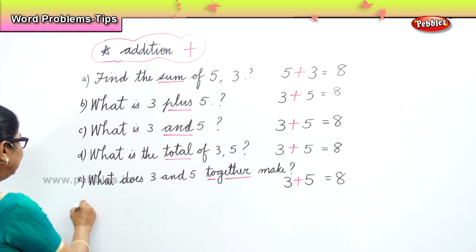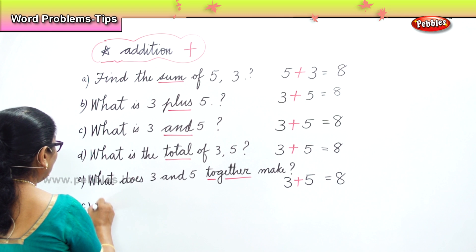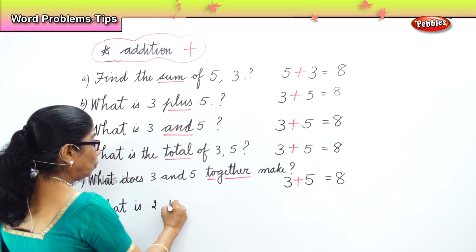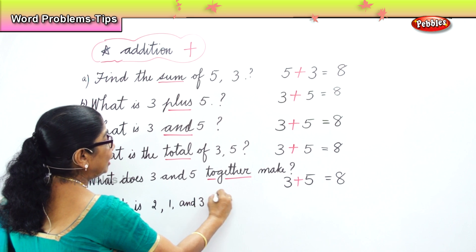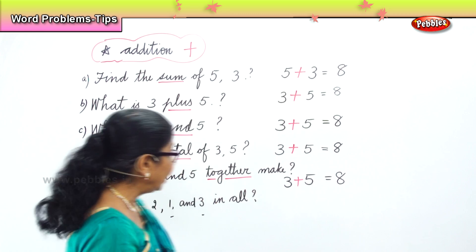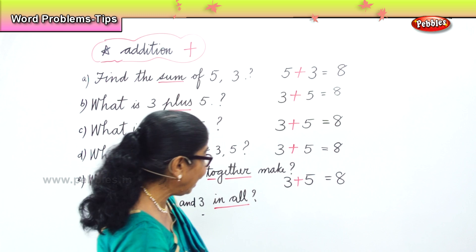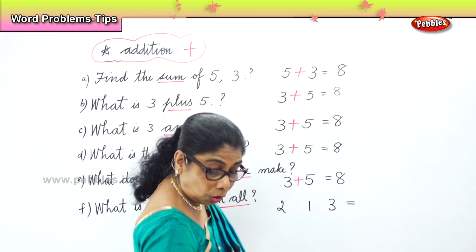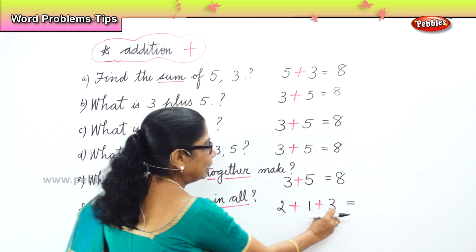Another small problem for you. What is two, one and three in all? I am going to give you three numbers now. When you say 'in all' in a word problem, it means addition — add. So, you have two, one and three in all. In all means two plus one plus three. That makes six.